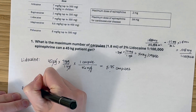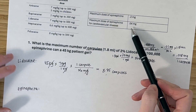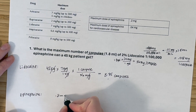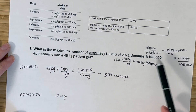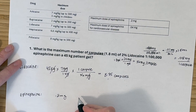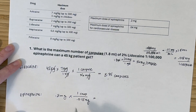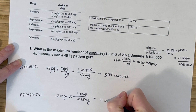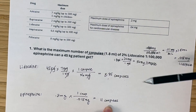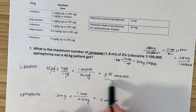Now for epinephrine: for an adult without cardiovascular compromise, the maximum dose is 0.2 milligrams. We calculated that one carpule contains 0.018 milligrams of epinephrine, so 0.2 ÷ 0.018 is about 11 carpules. Comparing the two numbers, 8.75 is smaller, so lidocaine is the limiting factor. The maximum number of carpules this patient can receive is just over eight and a half carpules.